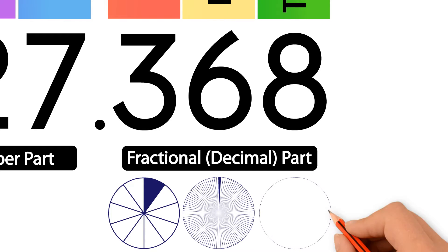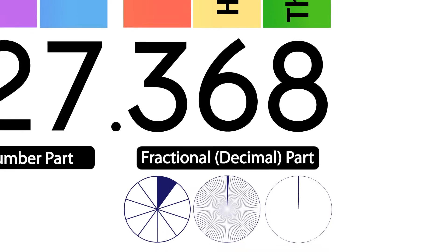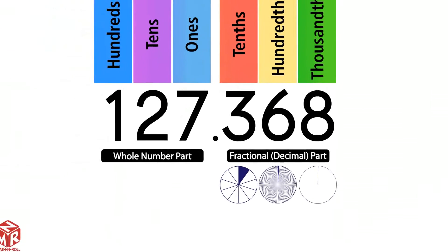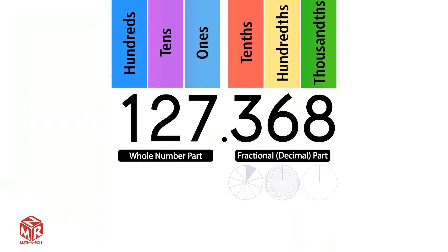1 thousandth is 1 part out of 1 thousand parts, and it is 10 times less than 1 hundredth. The place values of the fractional part of the number end with 'th', so we say tenths, hundredths, and thousandths.